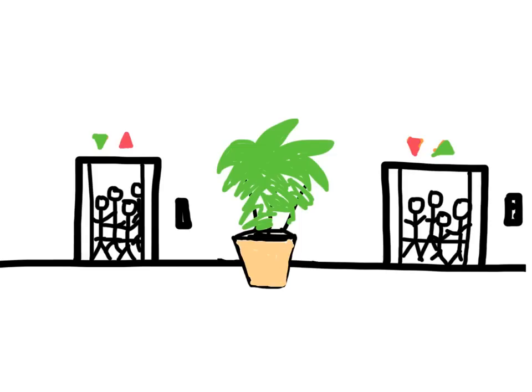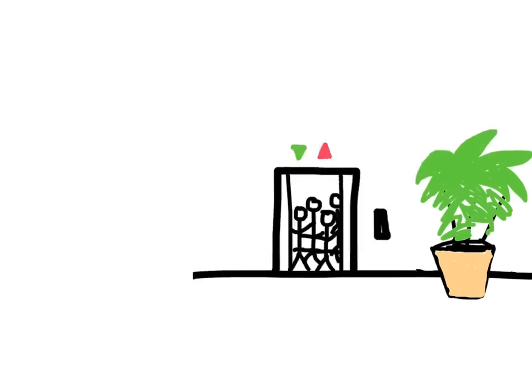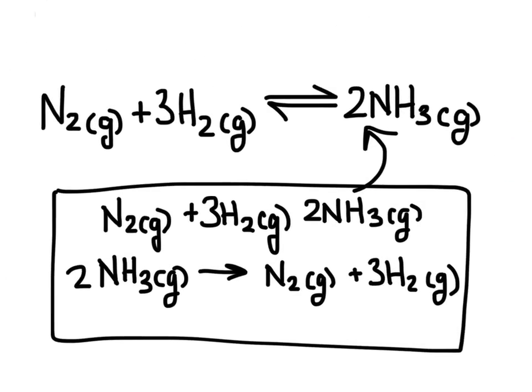Another important thing to remember is that reaching equilibrium does not mean the amounts on each floor are going to be the same. There might be a lot more people on the second floor compared to the first floor, but the rates at which people move from floor to floor are equal. In a chemical reaction, reactants convert to products and products convert back to reactants at equal rates — it doesn't tell us the amounts of each substance.